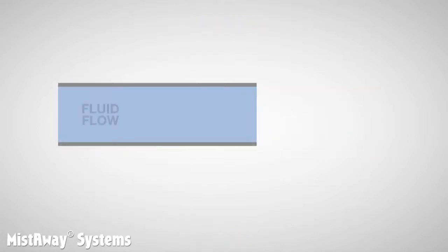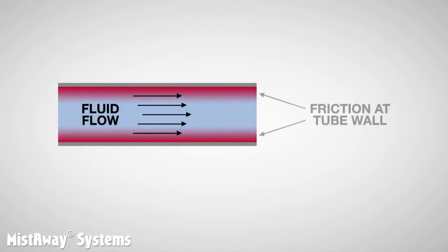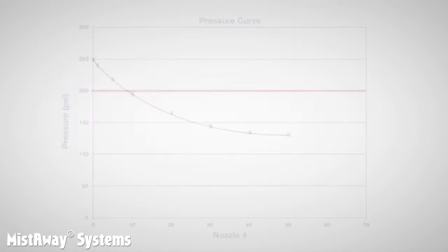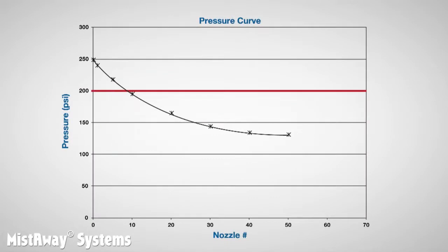The answer is friction. As the fluid moves down the tubing, friction between the tubing wall and the fluid causes pressure loss. But why is the pressure loss greater at the beginning of the run near the pump — the left side of the chart — than it is in the middle where the line flattens out?